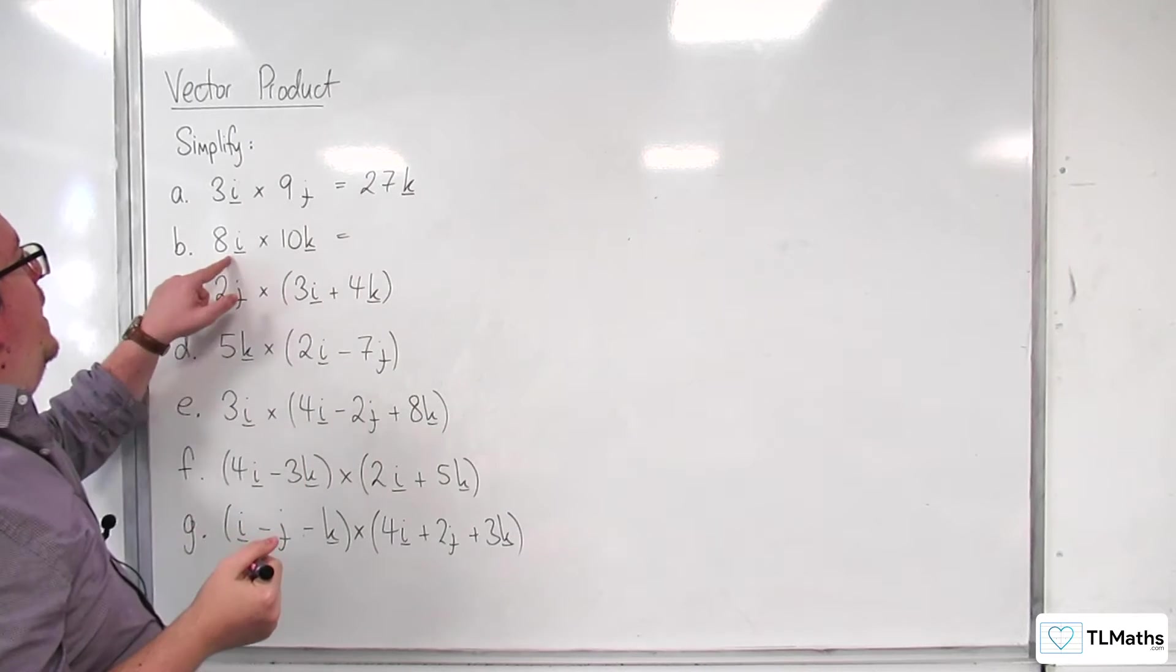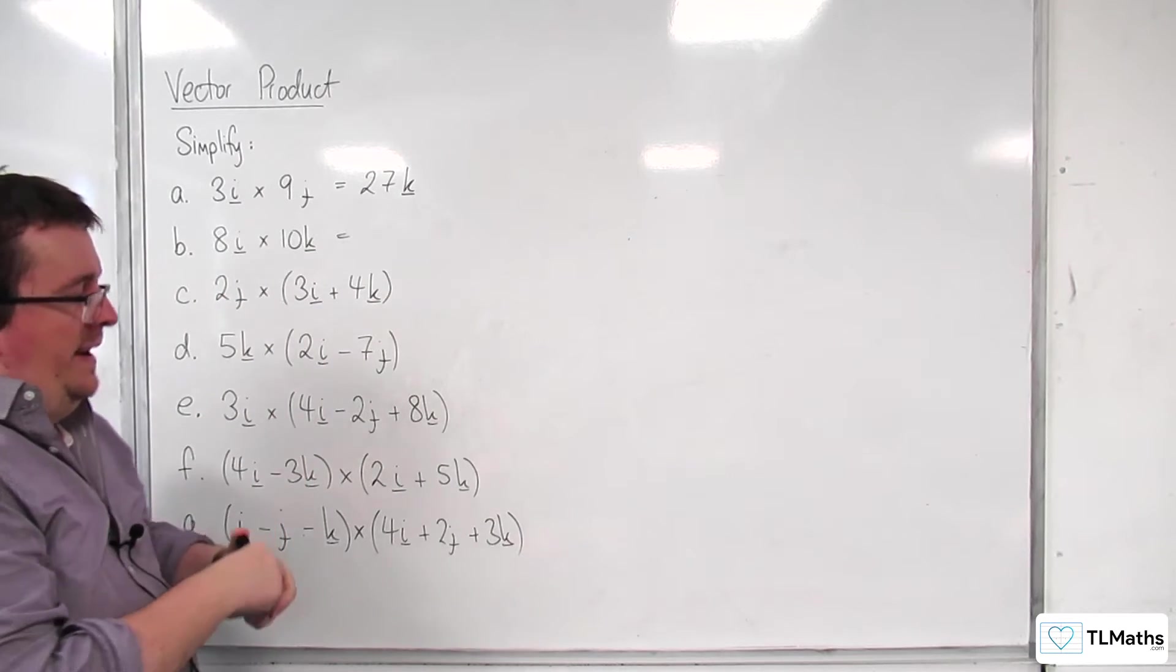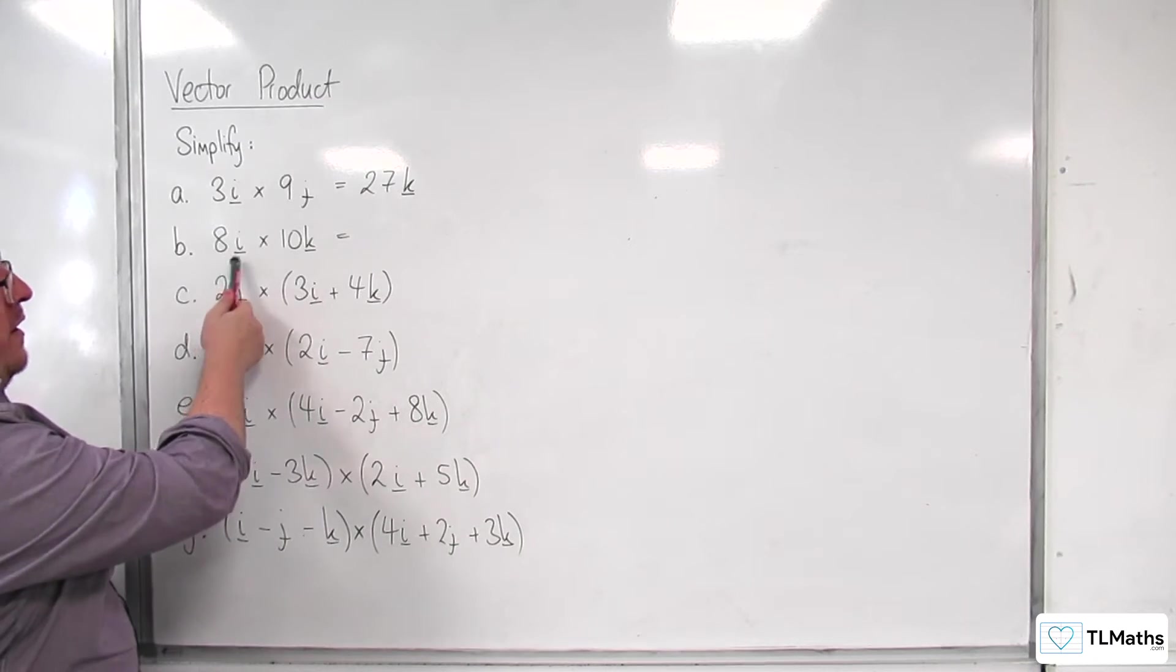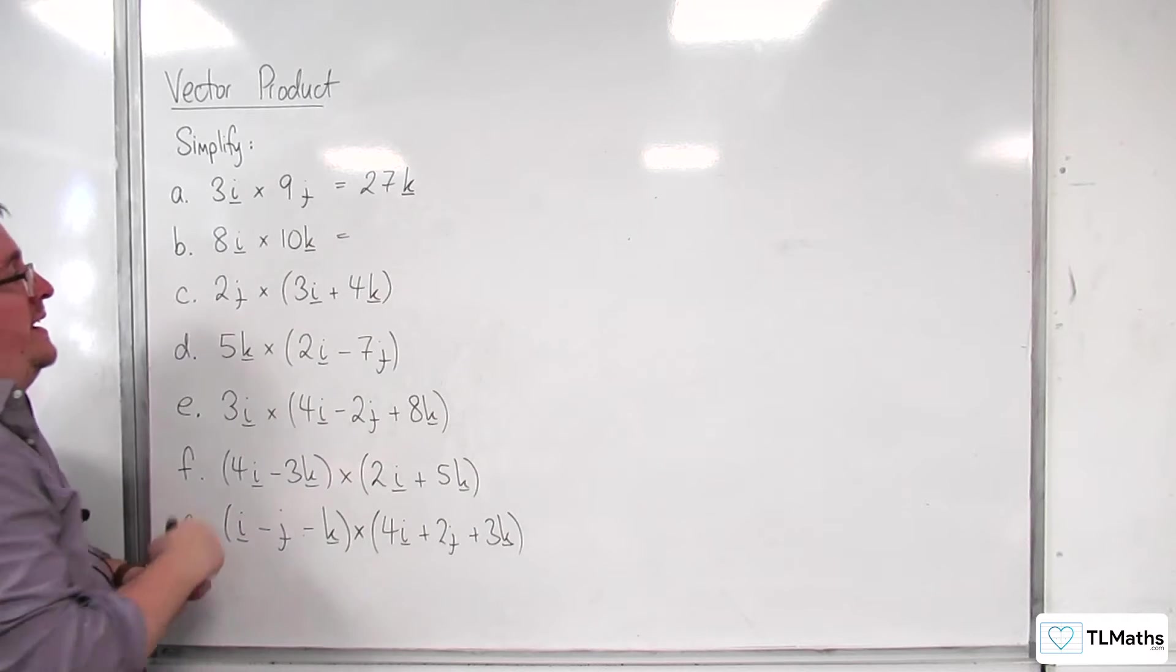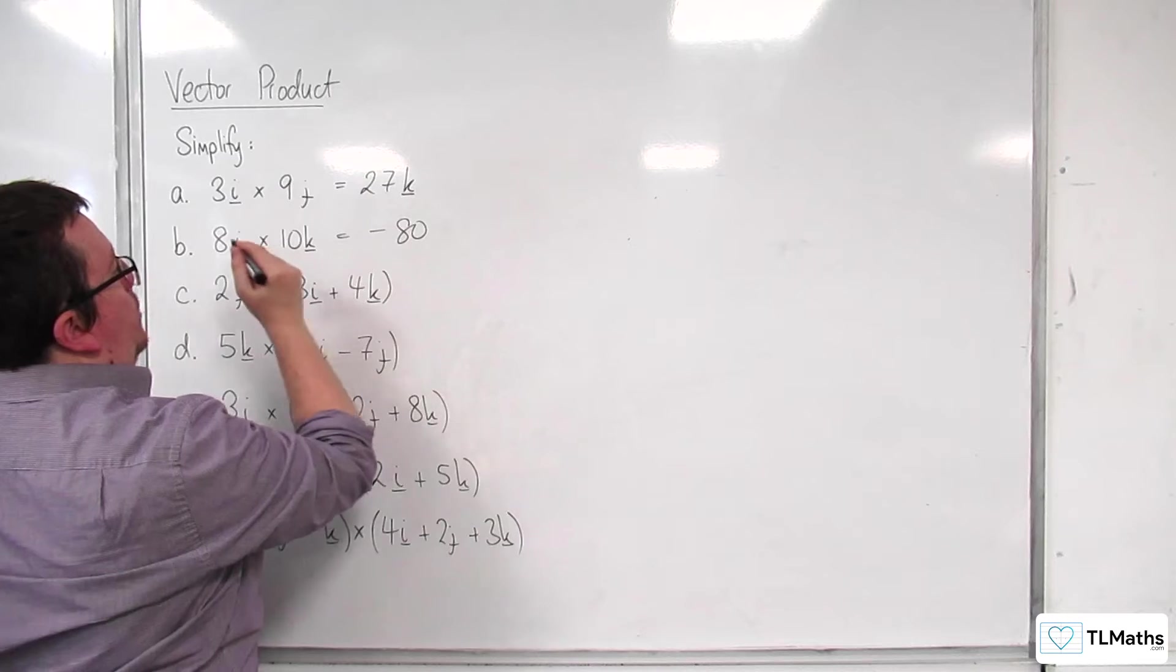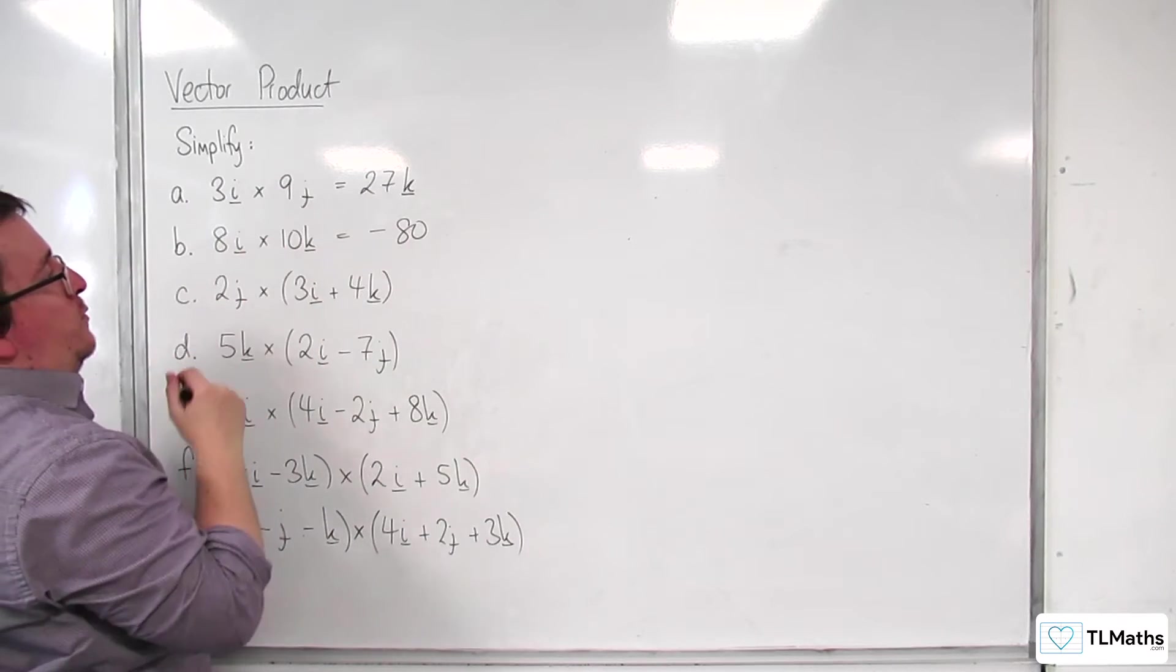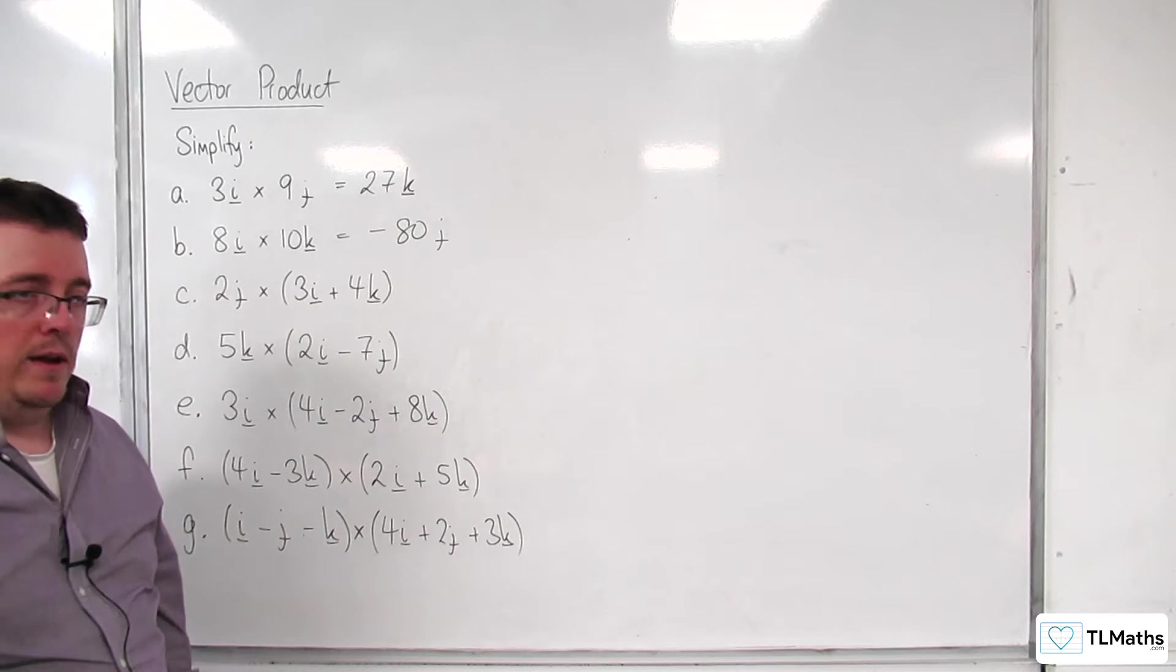Now, for the next one, 8i cross 10k. Now, we're not going i, j, k. So, we're going in the reverse order here. Okay. So, that means we're going to have a negative. 8 times 10 is 80. And so, i cross k will be minus j. So, minus 80j will be my answer.